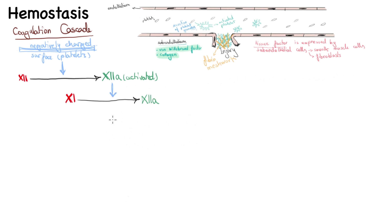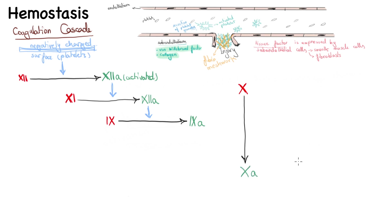Next, coagulation factor 9 is converted into its active form 9a, activated by coagulation factor 11a. Then coagulation factor 10 must be converted into its active form 10a, activated by factor 9a — except 9a cannot do this on its own and needs the help of factor 8a as a cofactor.